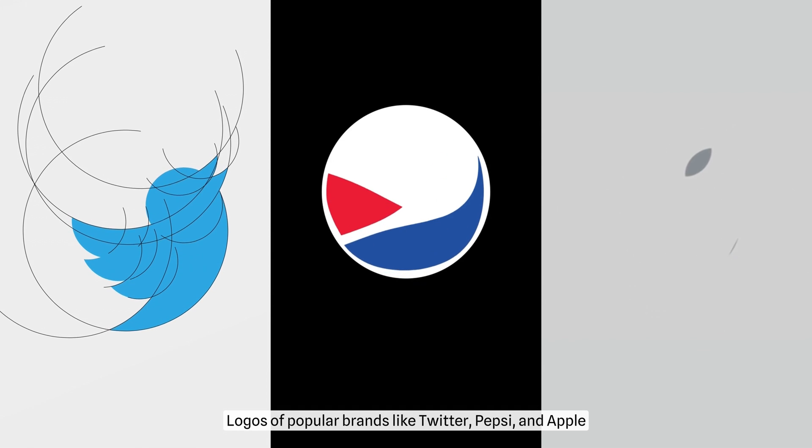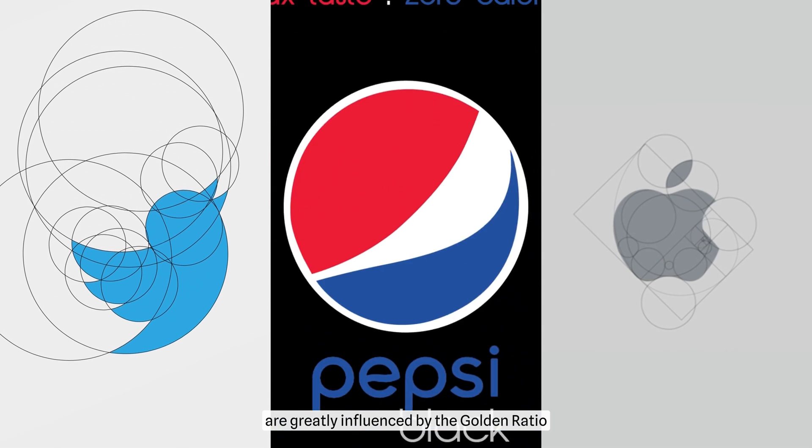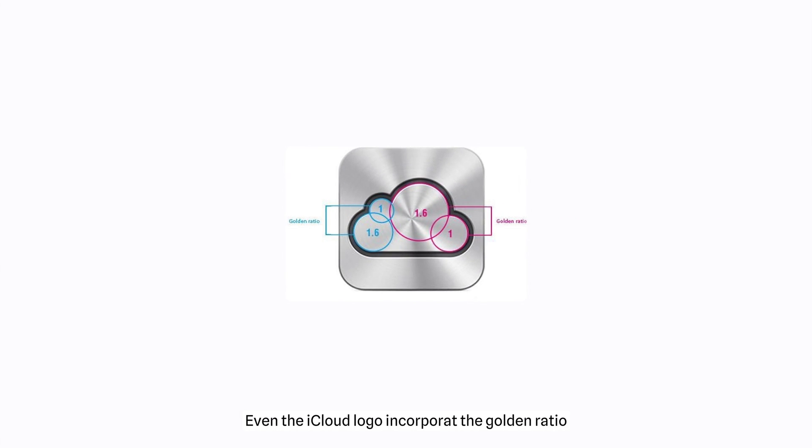Logos of popular brands like Twitter, Pepsi, and Apple are greatly influenced by golden ratio. Apple's affinity for the golden ratio is well known among their fans and in the design world. Even the iCloud logo incorporates the golden ratio.